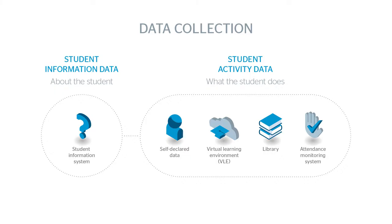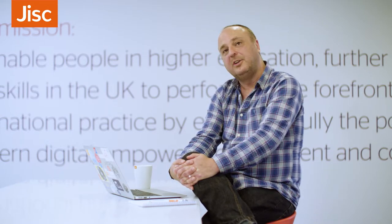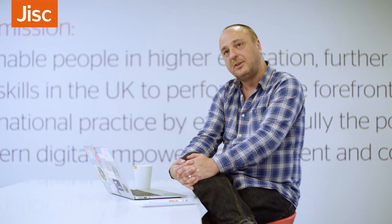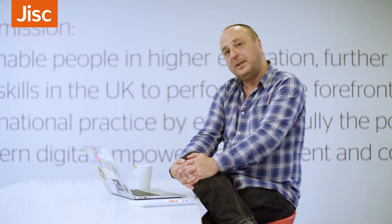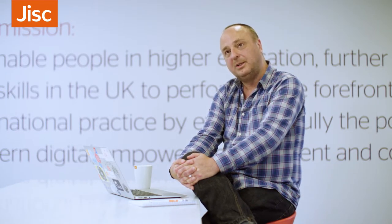Then there is the big data — data about the things the student does. In the first instance we're collecting these from places like the virtual learning environment, from library systems, presence data (was a student in a place), attendance data (were they somewhere they should have been), and other data sources such as wireless systems. All of these systems leave a trail of data collected in a standard format, then put into the learning records warehouse typically in real time.